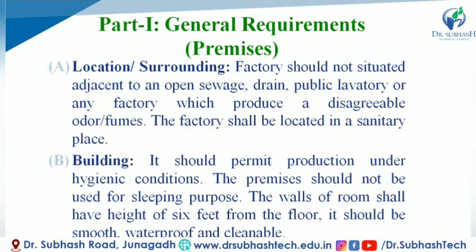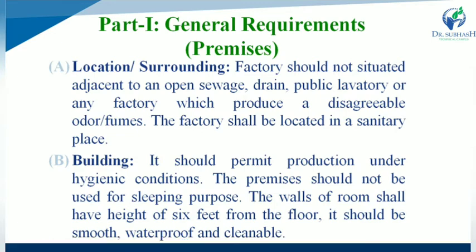Part 1 covers general requirements for premises. The first requirement is location and surroundings. The factory should not be situated near an open sewage, any drainage, public lavatory, or any factory which produces a disagreeable odor or fumes. The location should only be in a sanitary place.